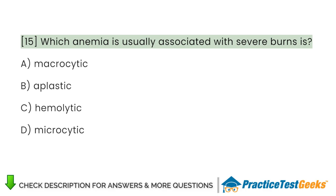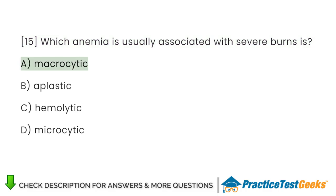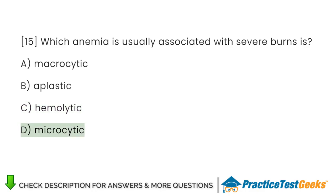Which anemia is usually associated with severe burns? A. Macrocytic. B. Aplastic. C. Hemolytic. D. Microcytic.